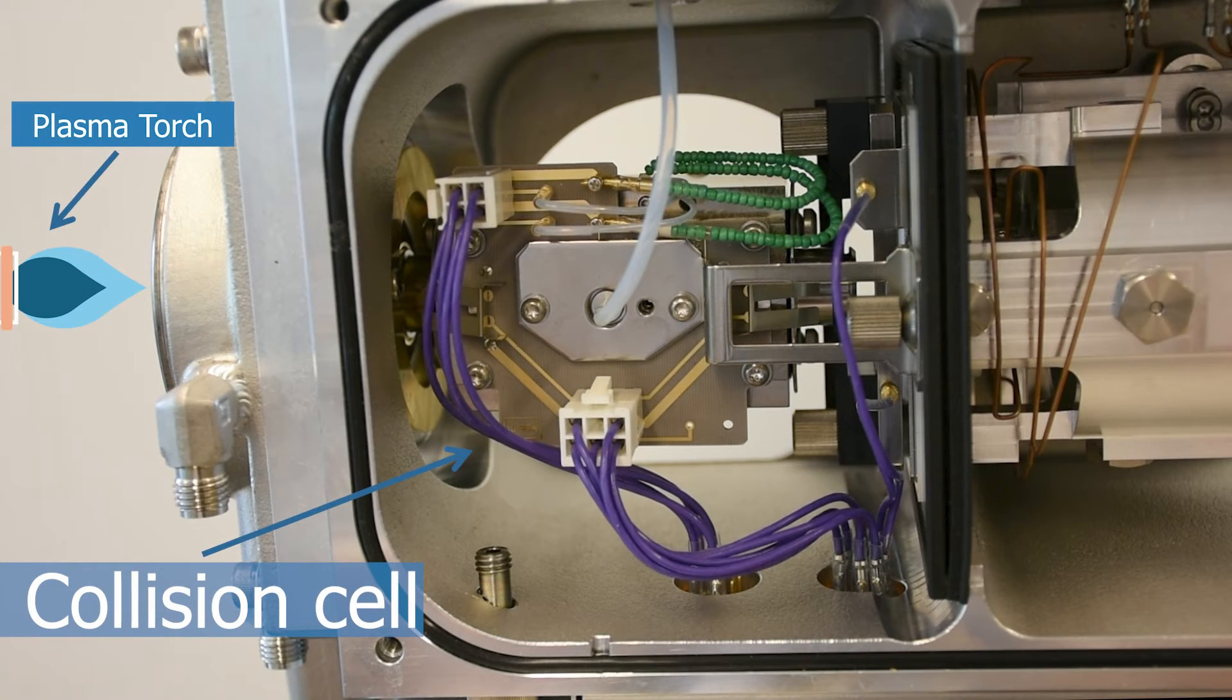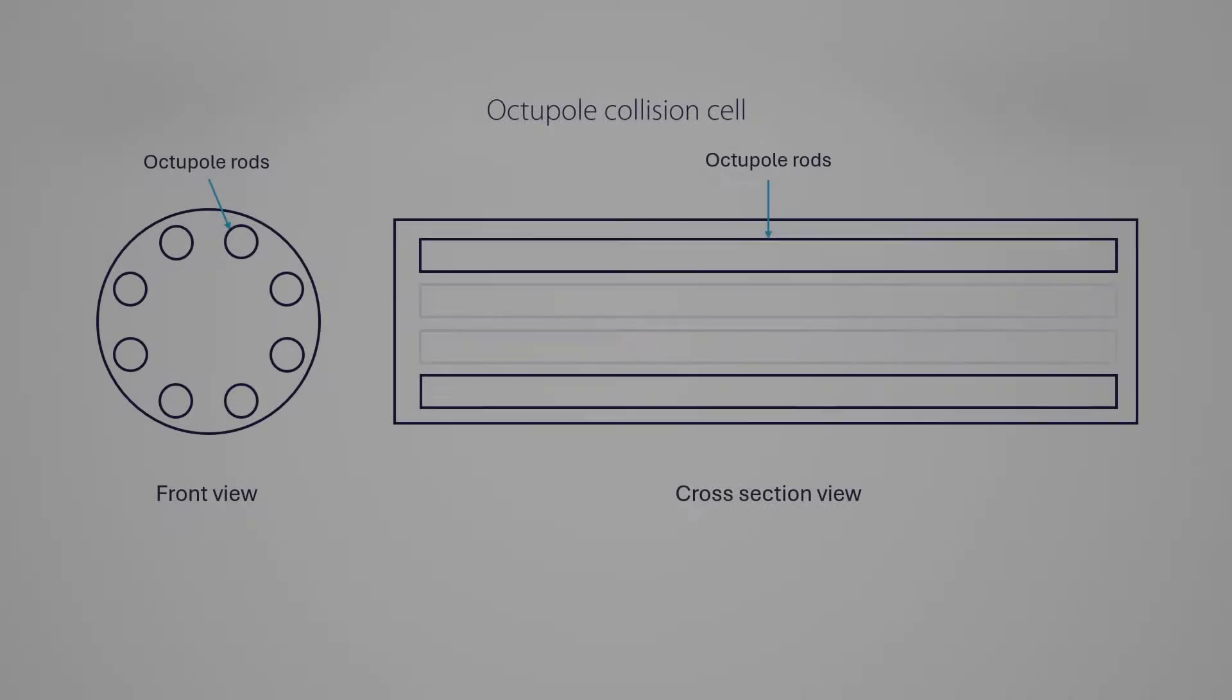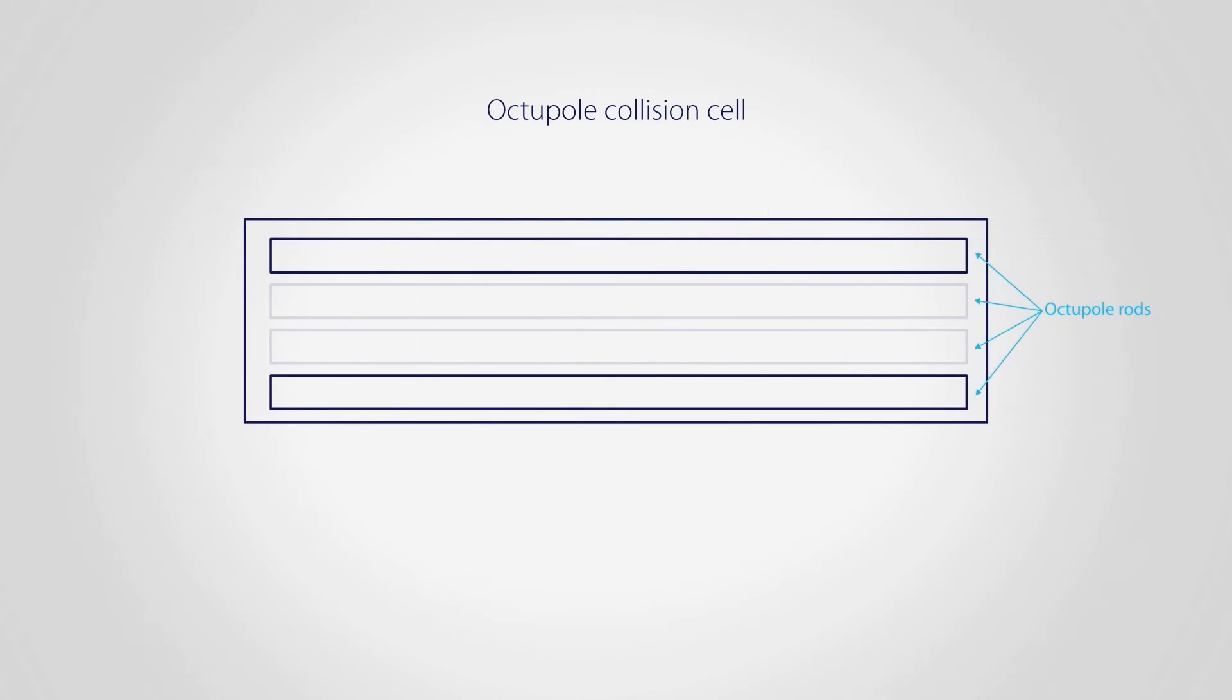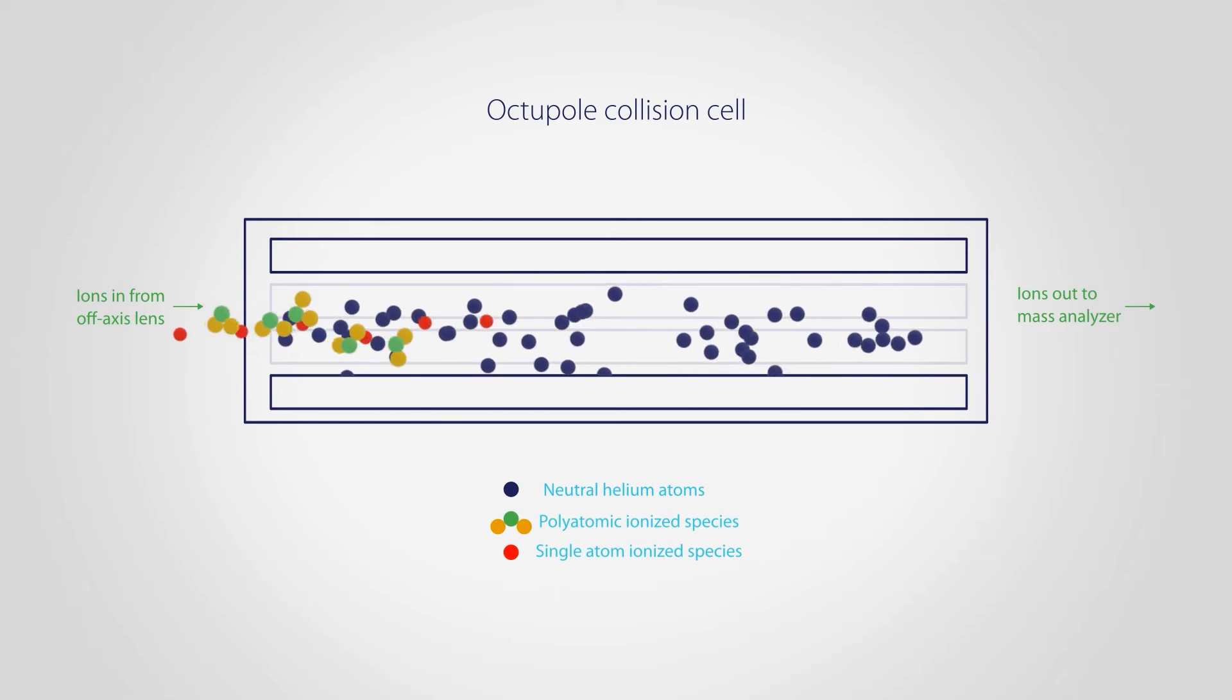The octopole collision cell is crucial for removing spectral interference by limiting polyatomic ions from entering the quadrupole mass analyzer. The octopole consists of eight charged rods inside a chamber filled with helium gas. Recall the ion beam contains both monoatomic and small polyatomic ions. As this mixture travels through the helium-filled collision cell, the bulkier polyatomic ions collide more frequently with helium atoms.